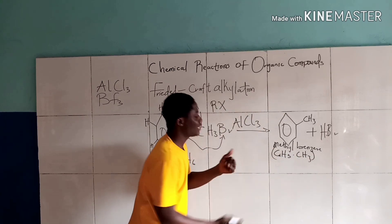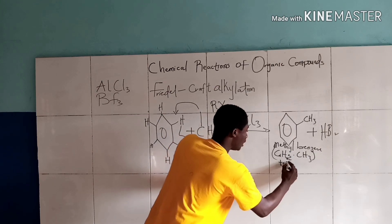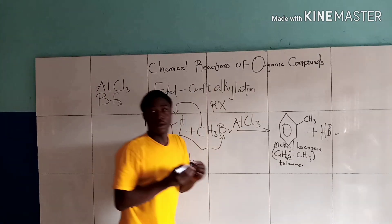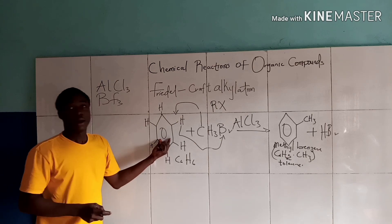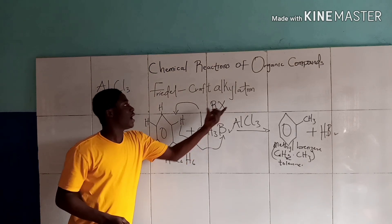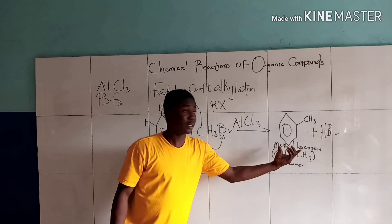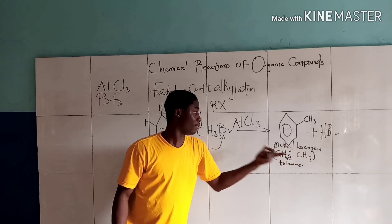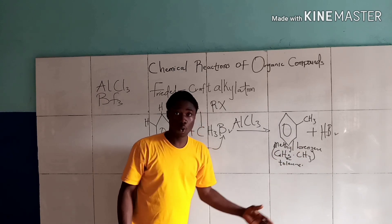Methylbenzene is popularly called toluene. So whenever a benzene group reacts with a haloalkane, this is what we get — methylbenzene, which is also called toluene.